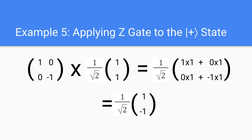For example 5, let's take a look at what happens when we apply the Z gate to the |+⟩ state. Remember that the |+⟩ state is uniform superposition, where we have 1 on the top and 1 on the bottom, multiplied by a scalar of 1 over root 2. When we multiply the Z gate by the |+⟩ state matrix, we get 1 over root 2 as a scalar in front, times the matrix of 1 times 1 plus 0 times 1 on top, and 0 times 1 plus negative 1 times 1 on the bottom. Adding these up, we get 1 over root 2 times the matrix of 1 on top and negative 1 on the bottom, which is the |−⟩ state. So when we apply the Z gate to the |+⟩ state, we get back the |−⟩ state.